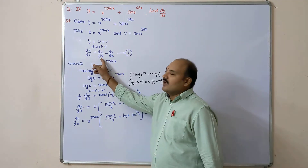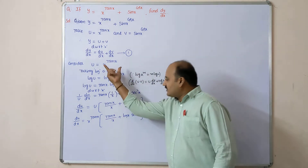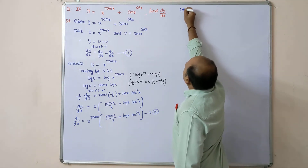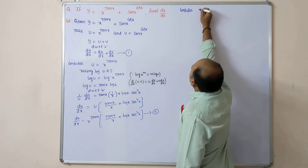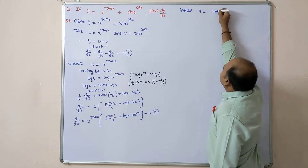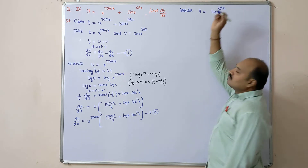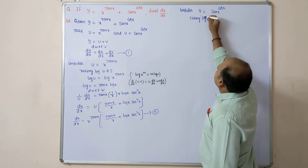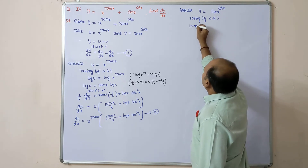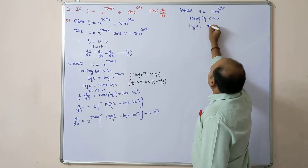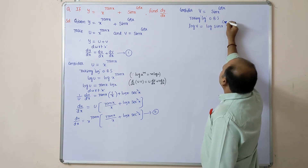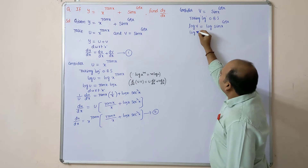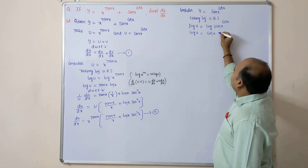Now to get dv/dx, proceed the same way. Consider v = sin(x)^(cos x). Taking log on both sides: log v = log(sin(x)^(cos x)). Applying the log a^m formula: log v = cos x · log(sin x).